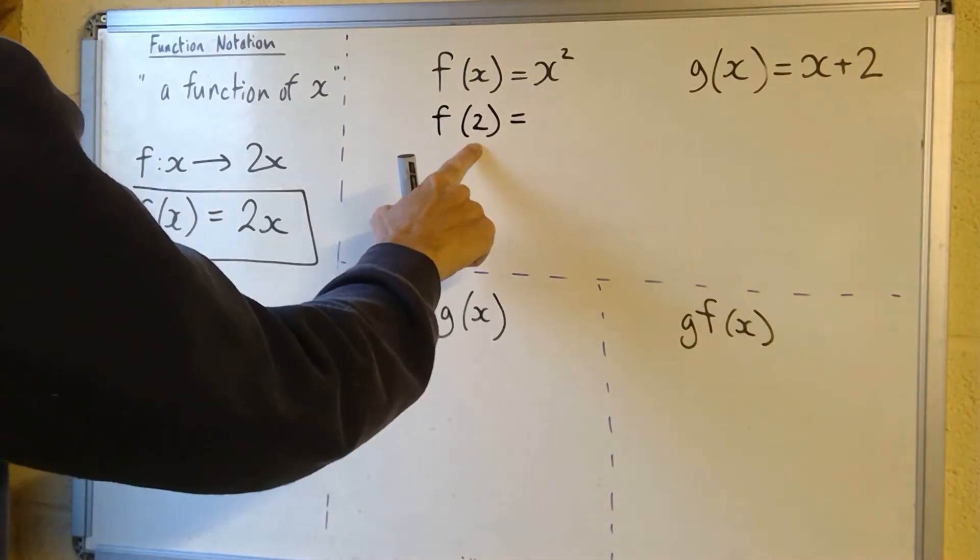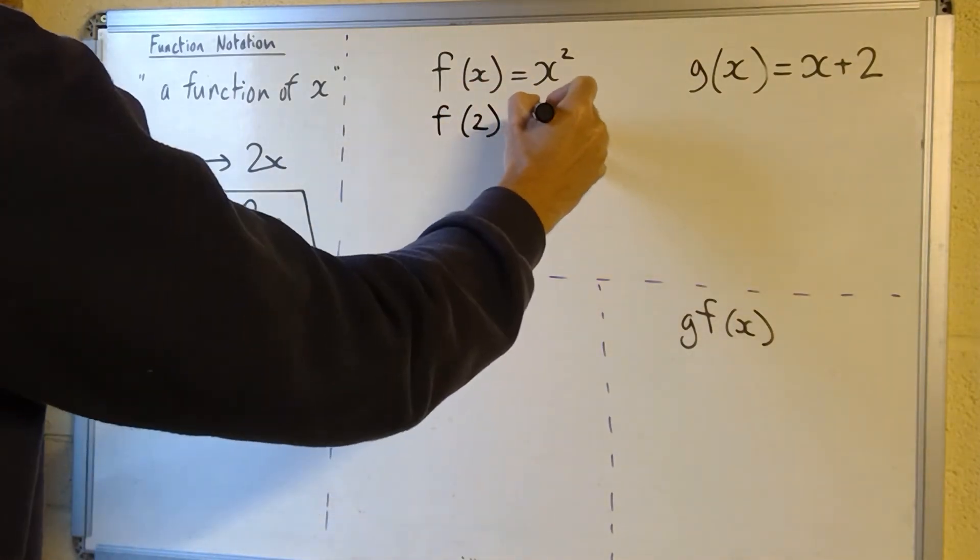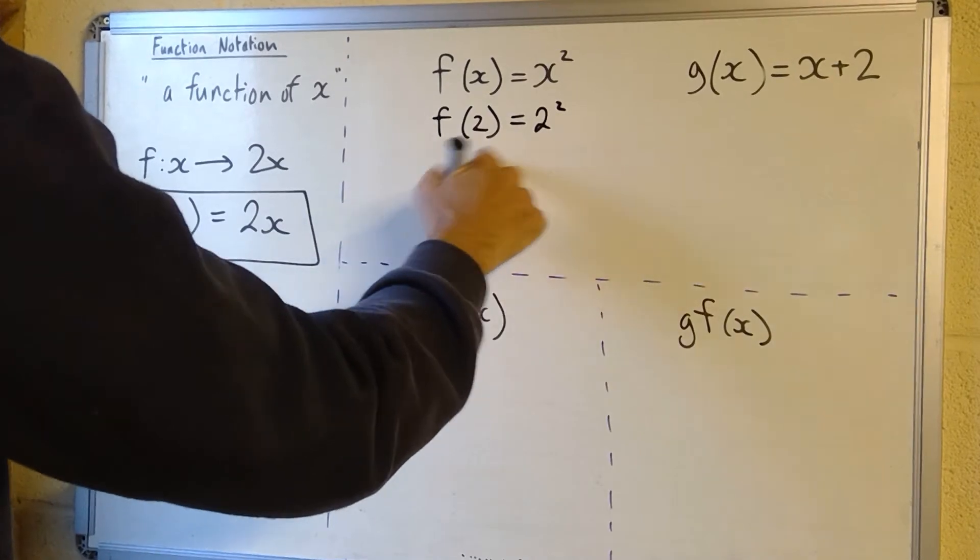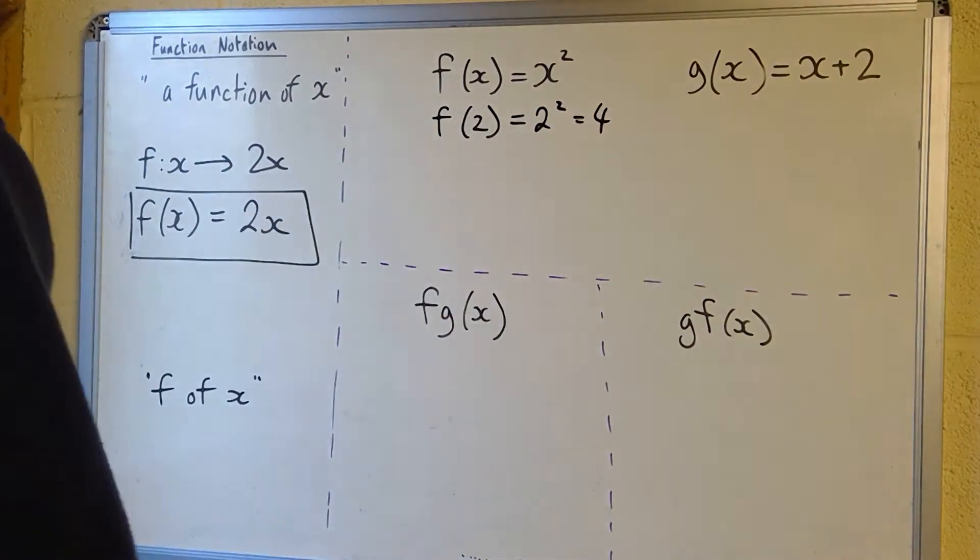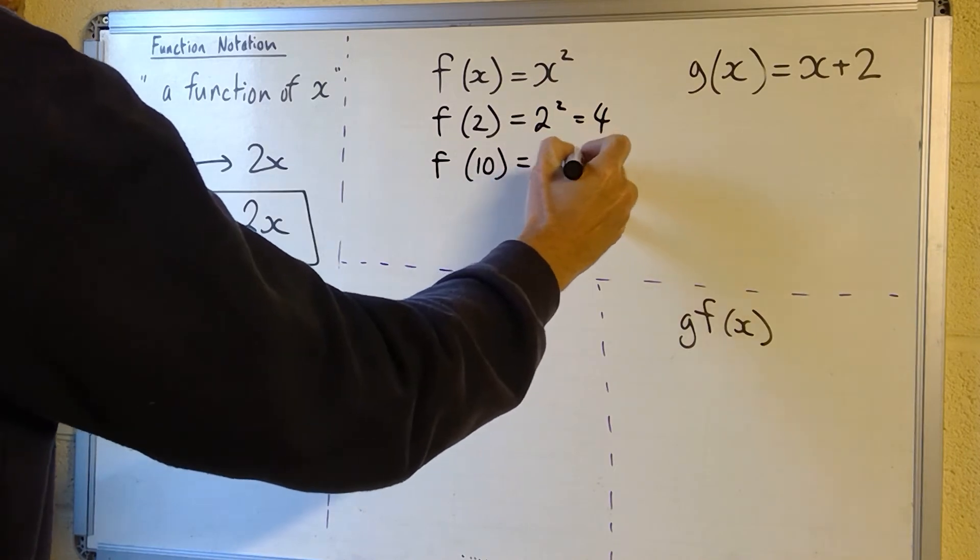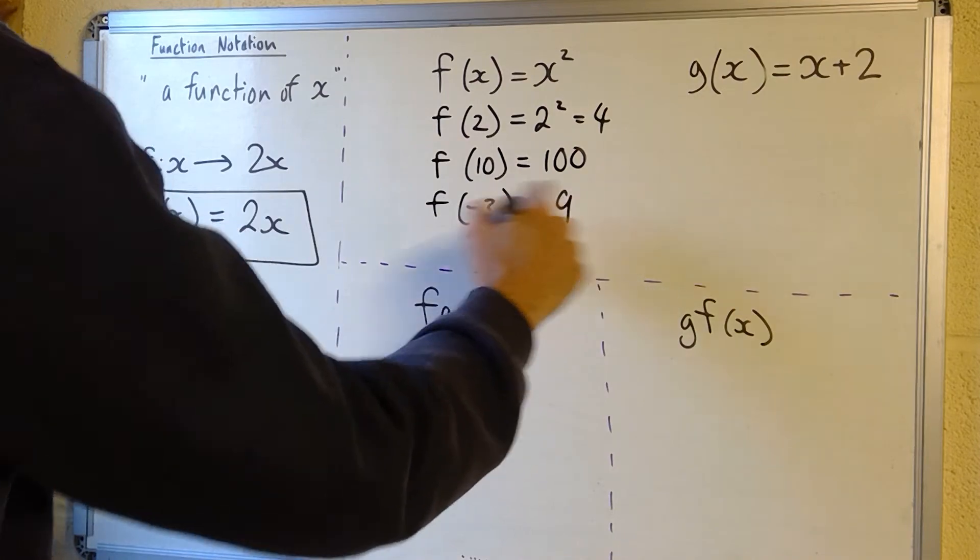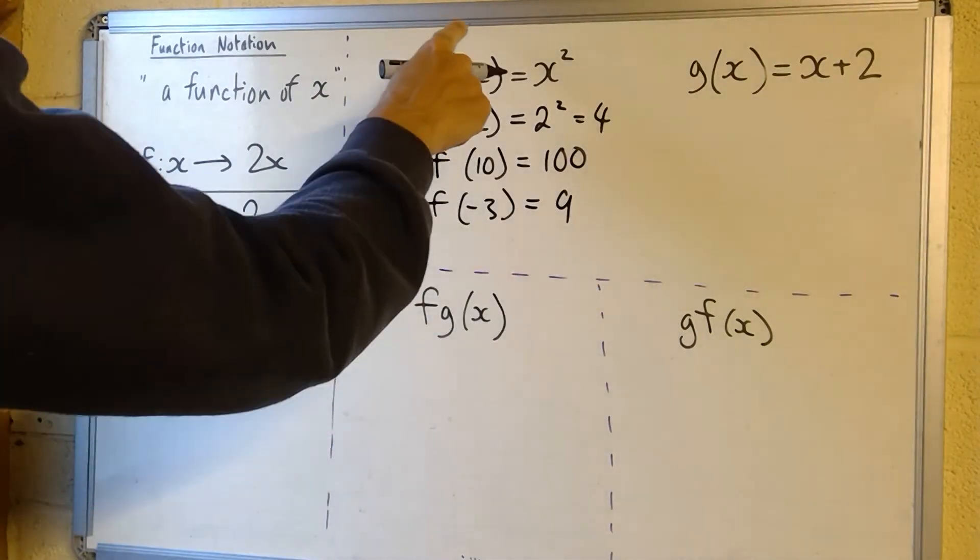So the x has changed to a 2, so here again the x is going to change to 2. So f of 2 is 2 squared which is 4. f of 10 would therefore be 100, 10 squared. f of negative 3 would be 9, negative 3 squared.